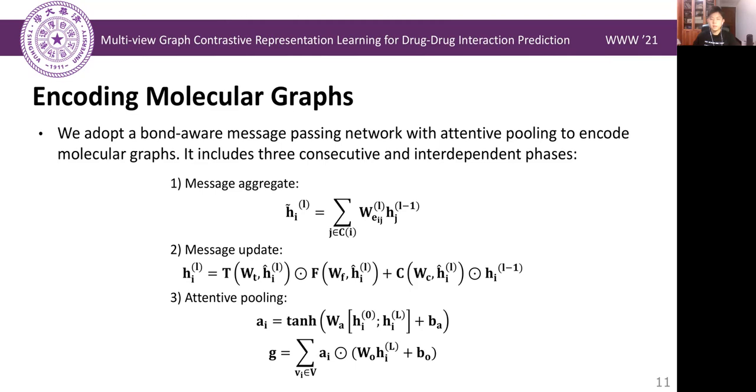The first is aggregating message. Here, we define different learnable weight parameters for different types of chemical bonds. The second is updating message. Here, we are inspired by the highway network to define three non-linear transforms T, F, and C, which refer to the transform gate, fuse gate, and carry gate, respectively.